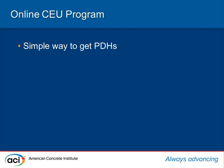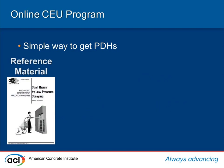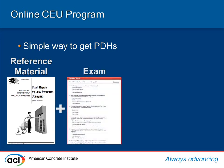Our online CEU program was developed as a really simple way for engineers to get their professional development hours. The way it works is there's a set of reference material put up for the course. At the beginning of this program, which was probably seven or eight years ago, it was mainly documents we put up — a lot of our repair application procedure documents were used — and we'd put together enough reference material to take about 45 minutes to an hour to study, combined with an online exam. Lately the reference material has been branching out: it could be a recorded web session, a portion of an audio book, or a portion of a technical document.